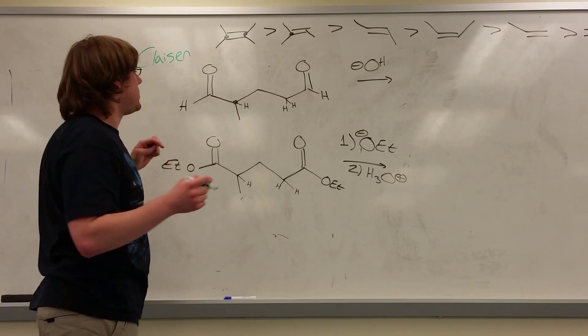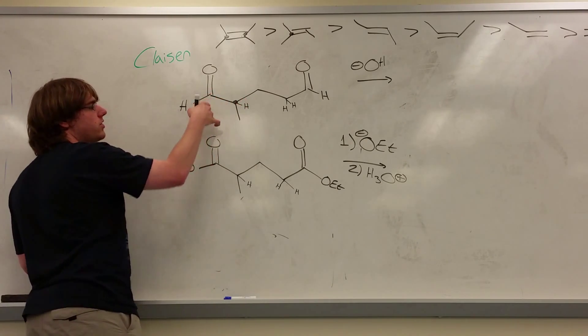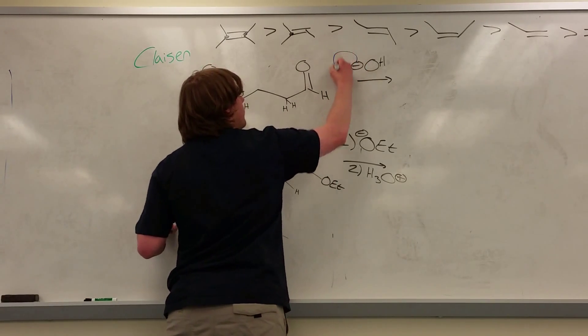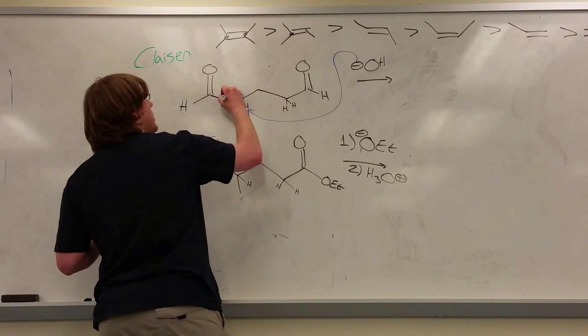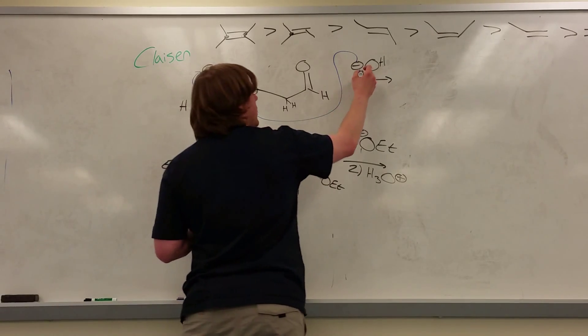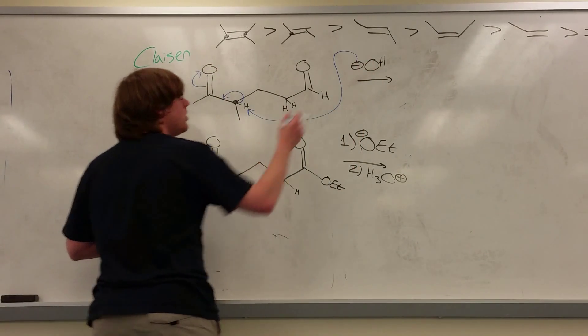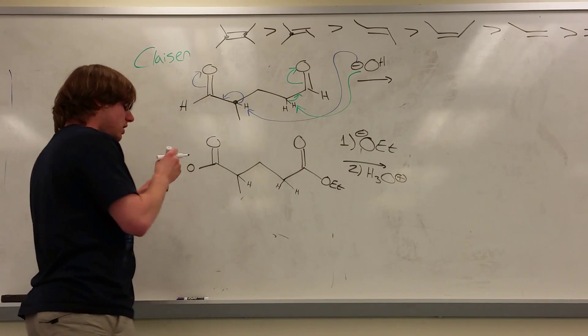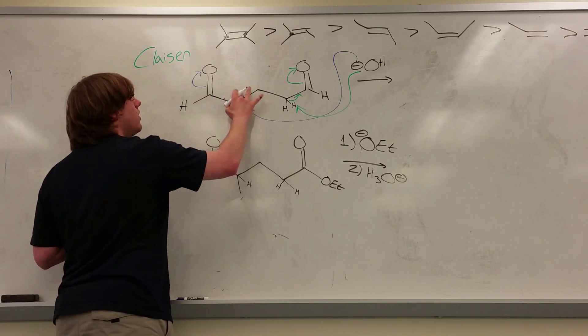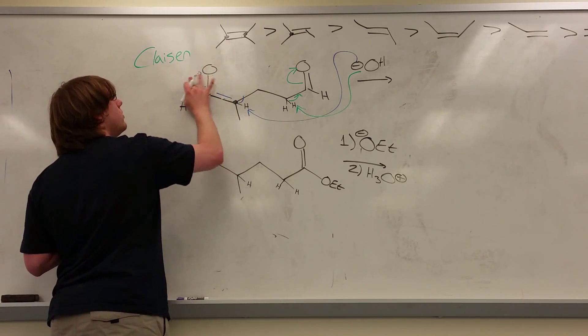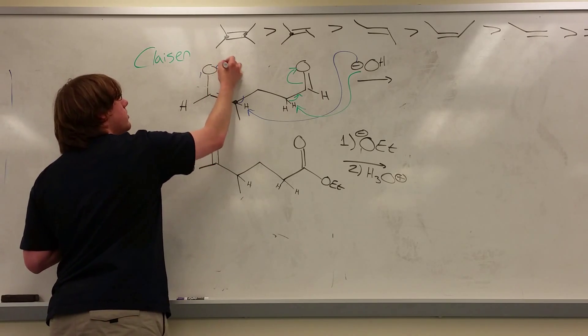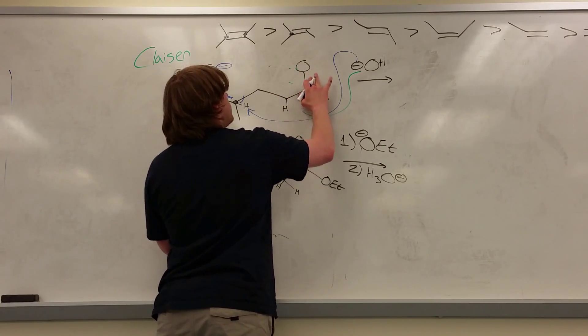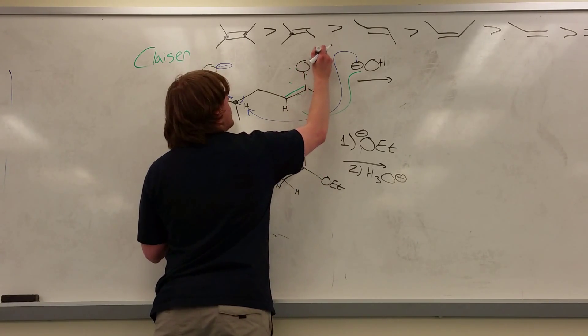So this is a general trend of stability of double bonds, but basically if I look at this carbon right here, and I know I'm going to form the enolate with the double bond O, I can either have this OH minus pull off the hydrogen over here, form that enolate like that, or I can have the OH minus grab one of these two alpha hydrogens and form an enolate there.